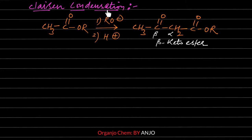For self-Claisen condensation, the ester must have an alpha hydrogen. The carbon adjacent to the functional group of the ester is called the alpha carbon, and the hydrogen present on this alpha carbon is called the alpha hydrogen.